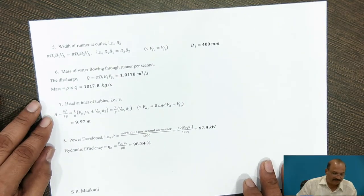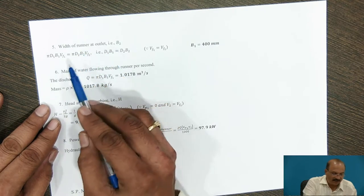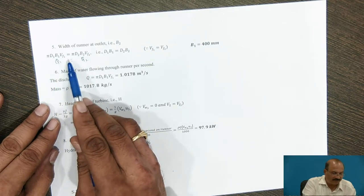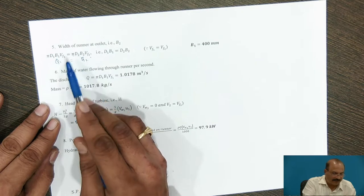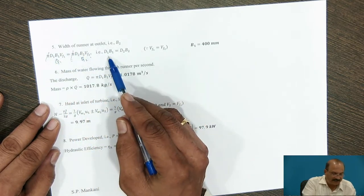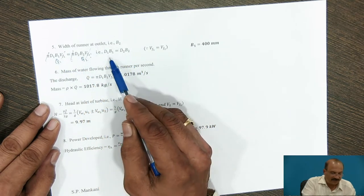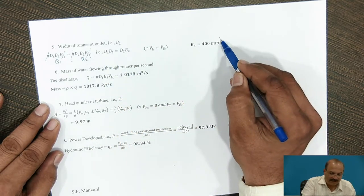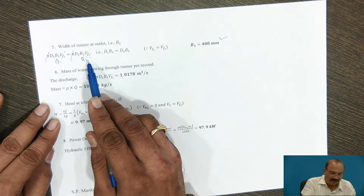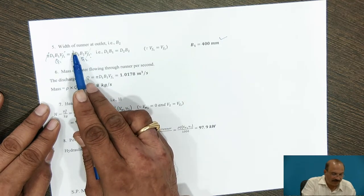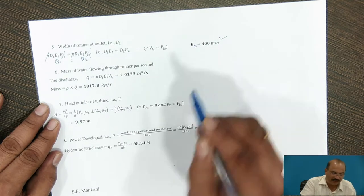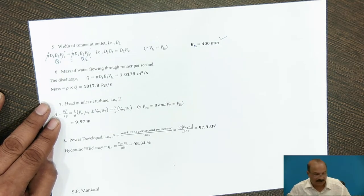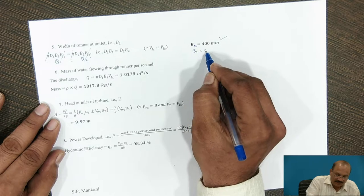For the width of the runner at outlet B2, using continuity: Q1 = Q2, so π D1 B1 Vf1 = π D2 B2 Vf2. Since Vf1 = Vf2, this simplifies to D1 B1 = D2 B2. With B1 = 200 mm given, substituting D1 = 0.9 m and D2 = 0.45 m gives B2 = 400 mm.